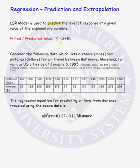Let's do a regression on the following data. The data consists of distance in miles and airfare in dollars for air travel between Baltimore, Maryland, to various U.S. cities as of January 8, 1995. For example, traveling from Baltimore to a city 189 miles away cost $98. Doing regression on this data set, predicting airfare from distance traveled, the regression equation is: predicted airfare equals $83.27 plus 0.117 times the distance traveled.